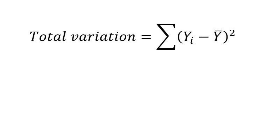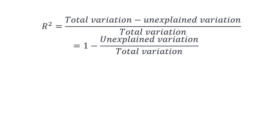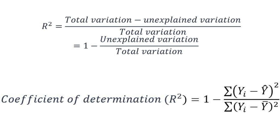Total variation is the squared deviation from the mean for the dependent variable y, which is the numerator for calculating the variance of y. Unexplained variation is the squared deviation from the predicted value of y, which is the numerator for calculating the standard error of estimate. The predicted value y-hat equals alpha-hat plus beta-hat times xi. Therefore, r-squared equals 1 minus the sum of squared deviations from the predicted values divided by the sum of squared deviations from the mean.